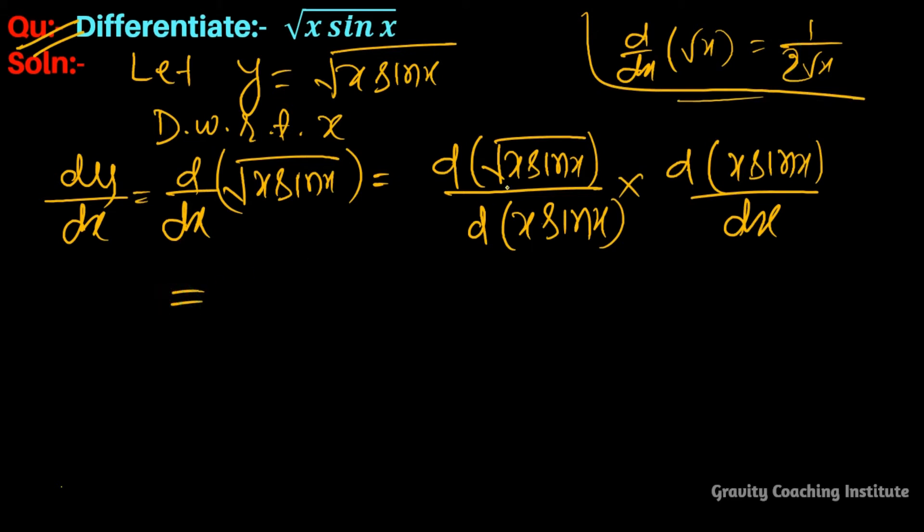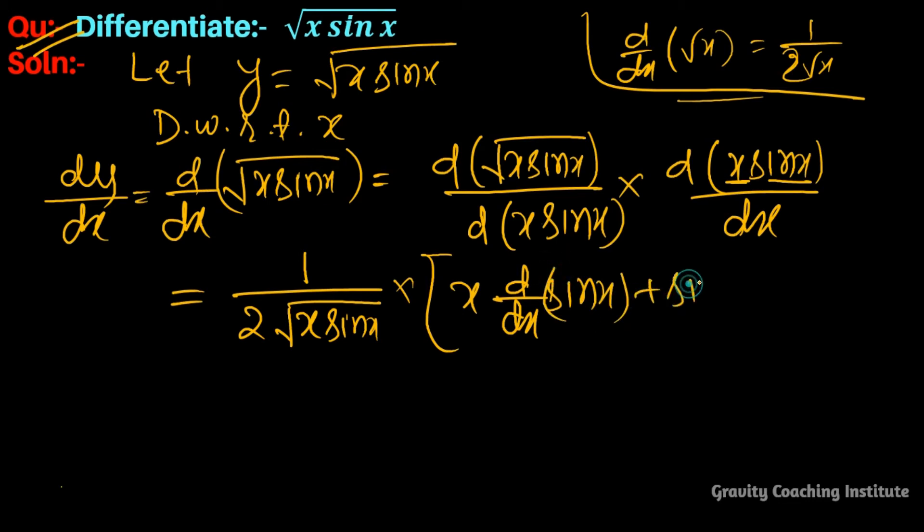So this equals 1/(2√(x sin x)). And here the product rule will apply: x times differentiation of sin x plus sin x times differentiation of x.